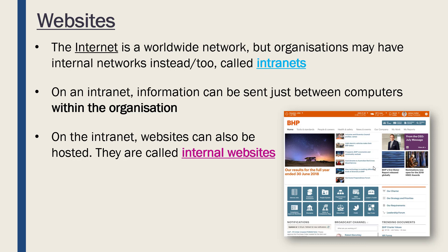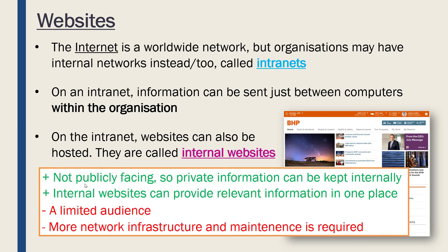It's hard to show examples of intranet sites because you have to be inside the organization to access them. This is a screen grab of some company's intranet — they're often quite boring, covering things like financial results, what to do if you have an IT issue, how to book time off work, and a message from the CEO. The information is specific to the company. Because they are not public-facing, the public can't access this — it's only inside the organization, so you can keep any private information internally.